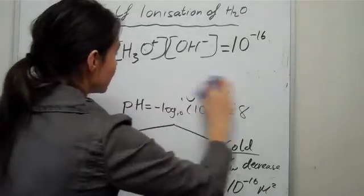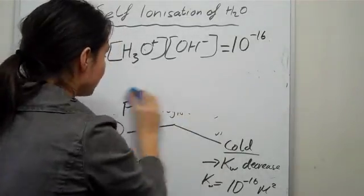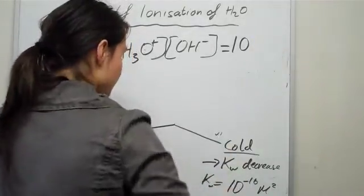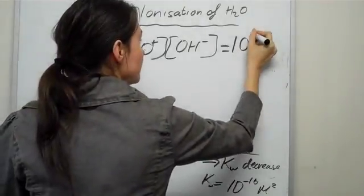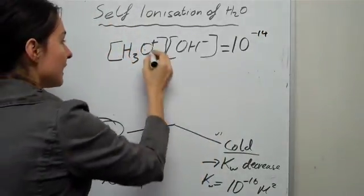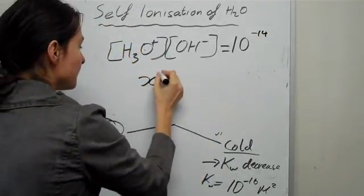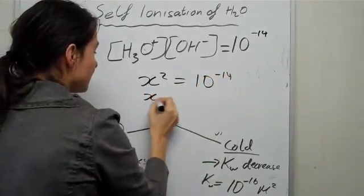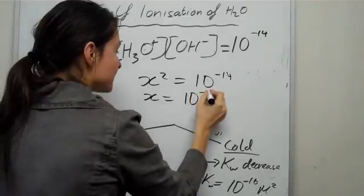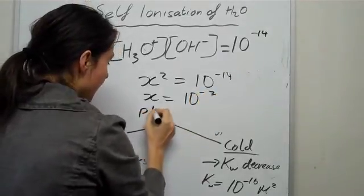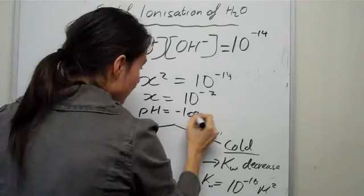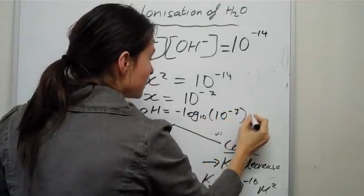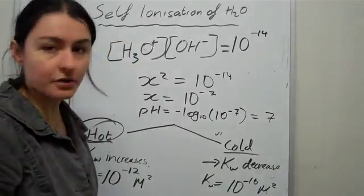Okay? So let's just have a look lastly at 25 degrees. And I'll show you how we actually get water to be neutral, pH of 7. So if this is normally negative 14 at 25 degrees, again, if you make these two equal to each other, it would be x squared equals to 10 to the minus 14. You square root that, and you get x equals to 10 to the minus 7. And that becomes a pH of negative log 10 of 10 to the minus 7, which is actually 7. So that's proof to you.